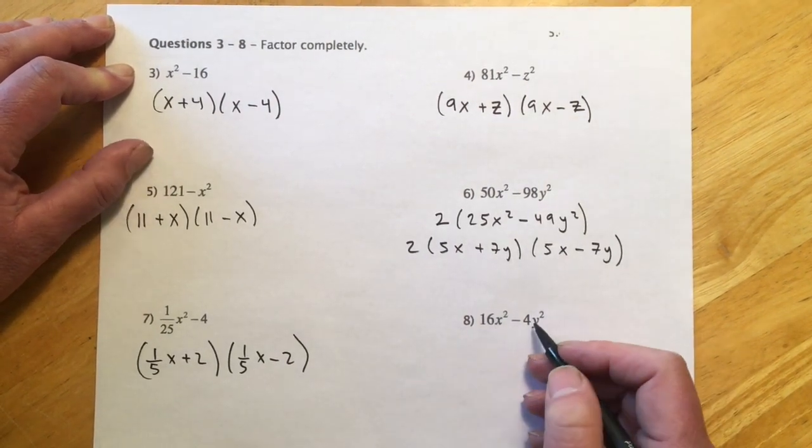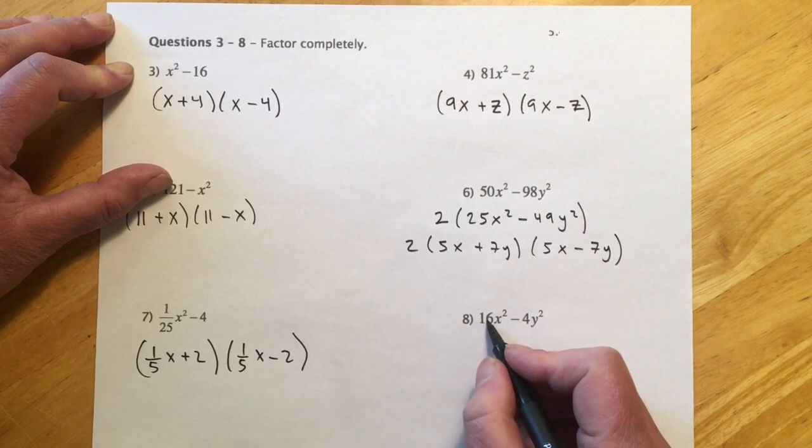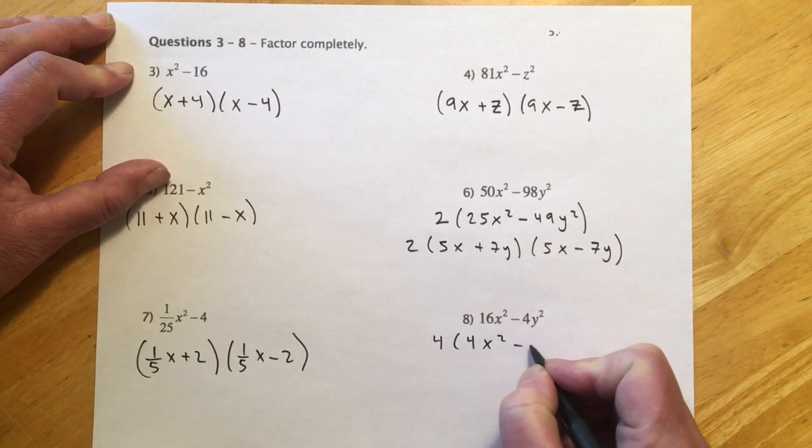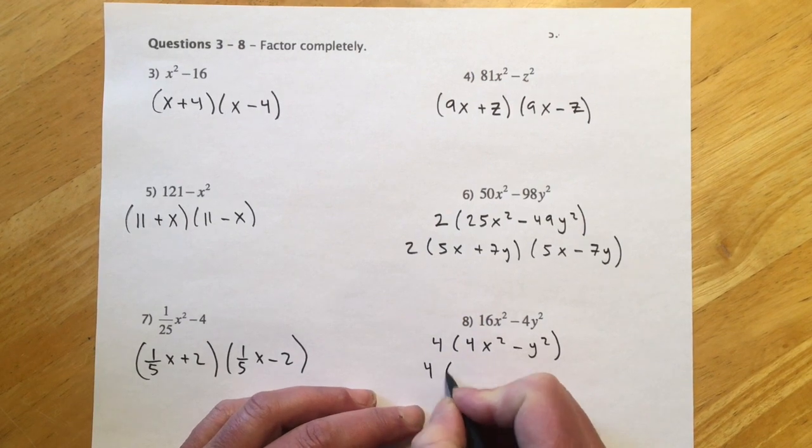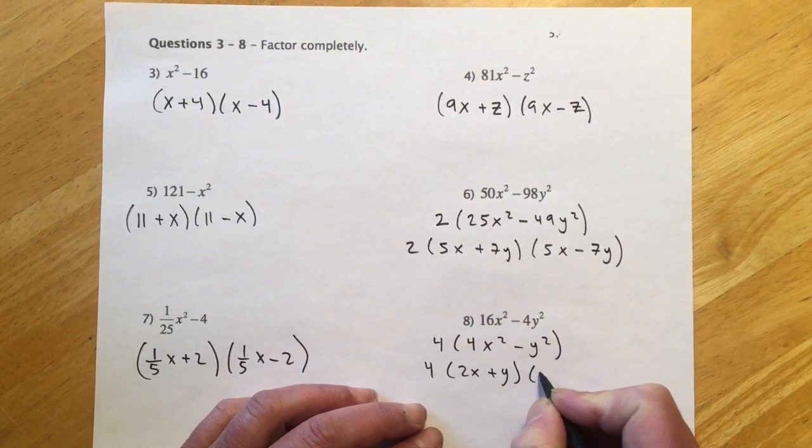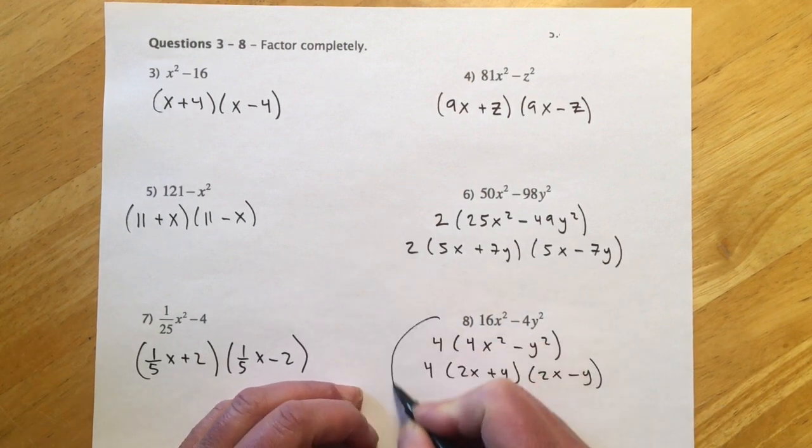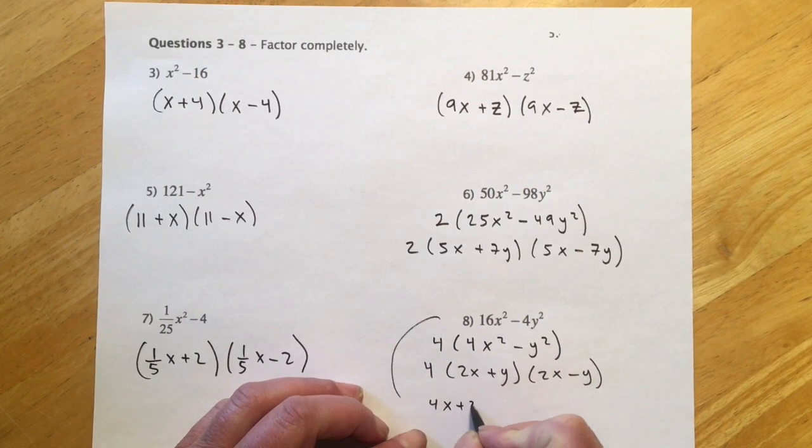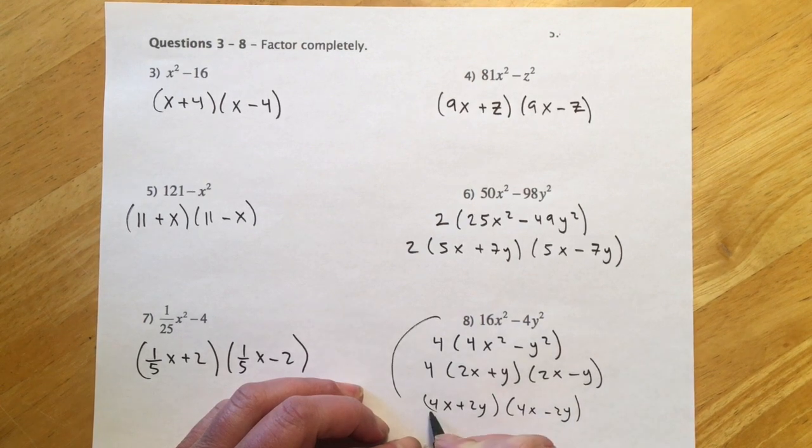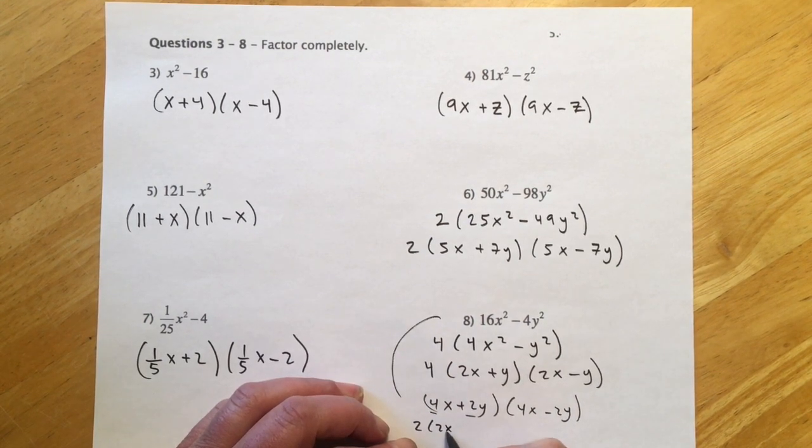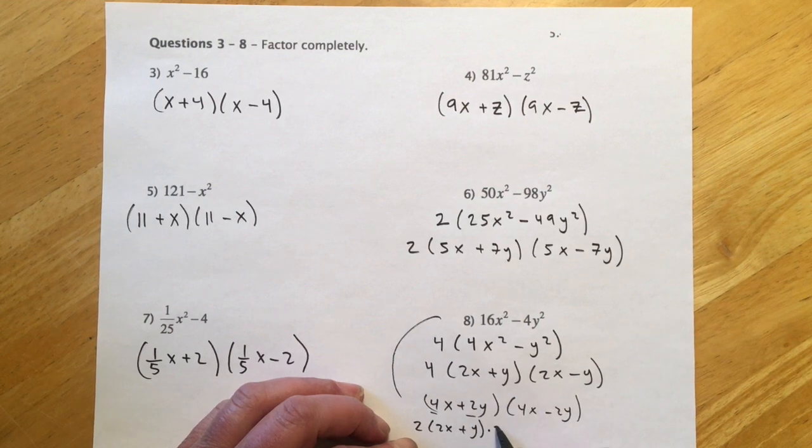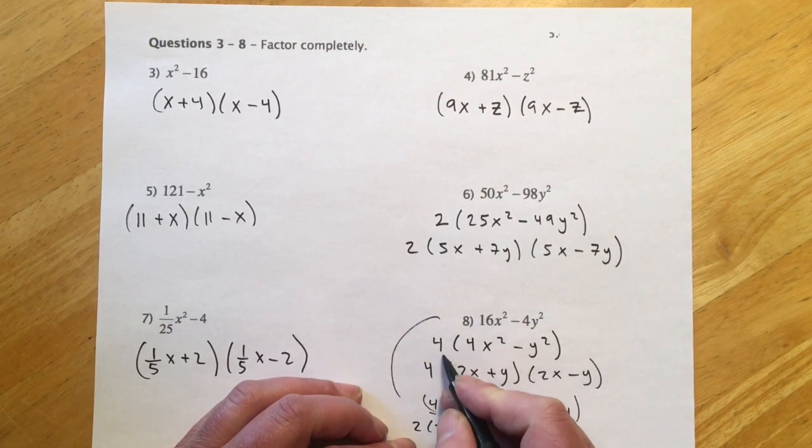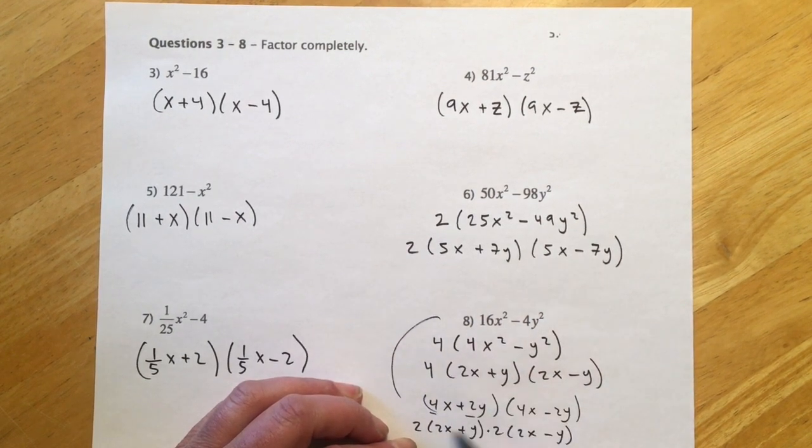This last one is a little tricky because the 4 and 16 are perfect squares, but they also have a 4 in common, so you've got to be careful to get that GCF out. That'll be 4(x² - y²), and then you'd have 4(2x + y)(2x - y). If you did it the wrong way and missed that GCF, you would have been at 4x + 2y, 4x - 2y, but then you would have had to notice you could factor 2 out of each of those. It's much easier if you catch the 4 at the first step than trying to catch it at the last step.